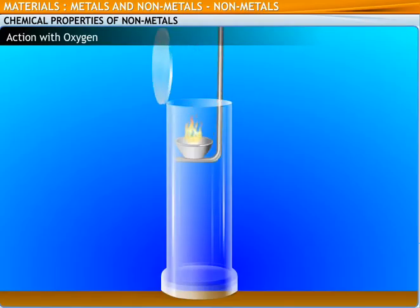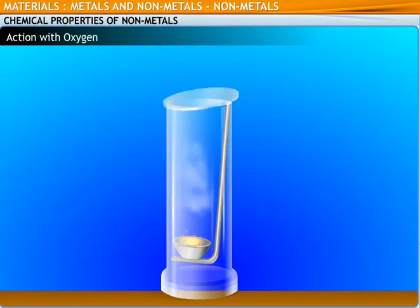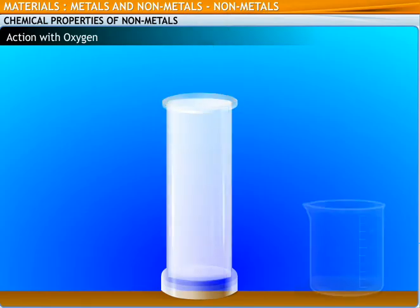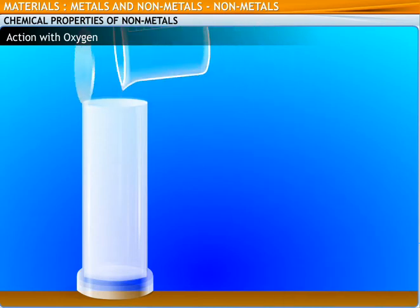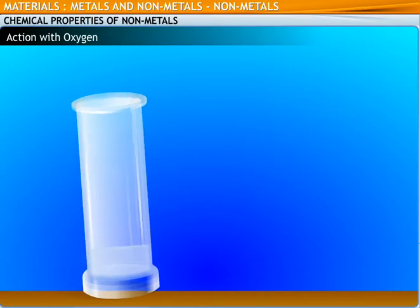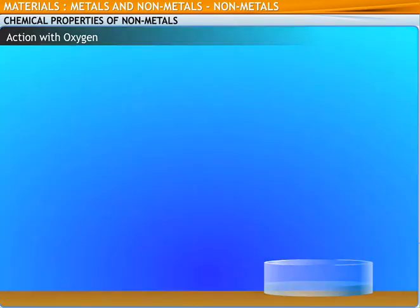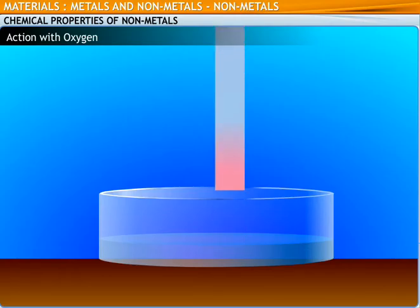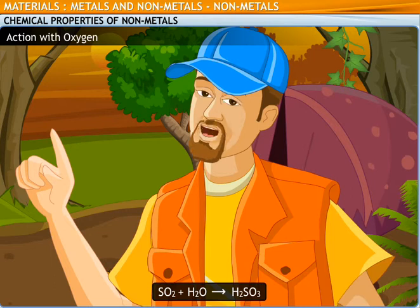As soon as the sulfur starts burning, introduce the spoon into a gas jar. Then, cover the jar with a lid to ensure that the produced sulfur dioxide gas does not escape. Remove the spoon after some time. Add a small quantity of water into the gas jar and quickly replace the lid. Shake the gas jar well. Sulfurous acid is formed. Now, introduce a blue litmus paper, which turns red. The sulfurous acid turns the blue litmus to red. This indicates the acidic nature of non-metal oxides. We can conclude that non-metal oxides are acidic in nature.